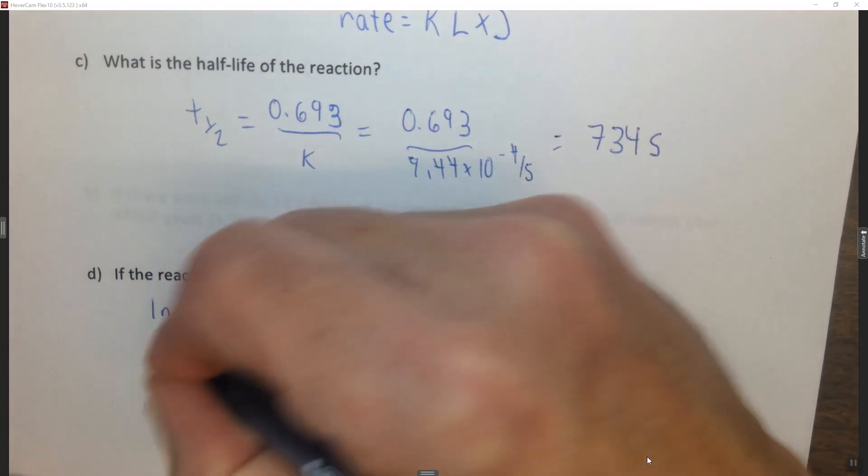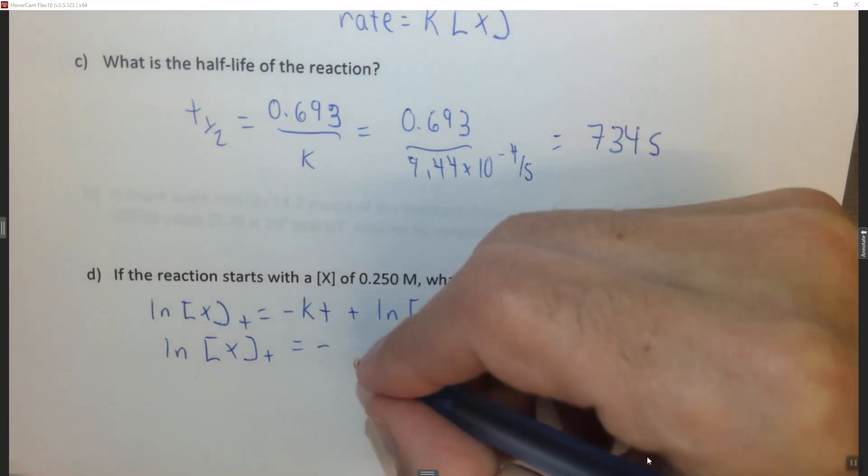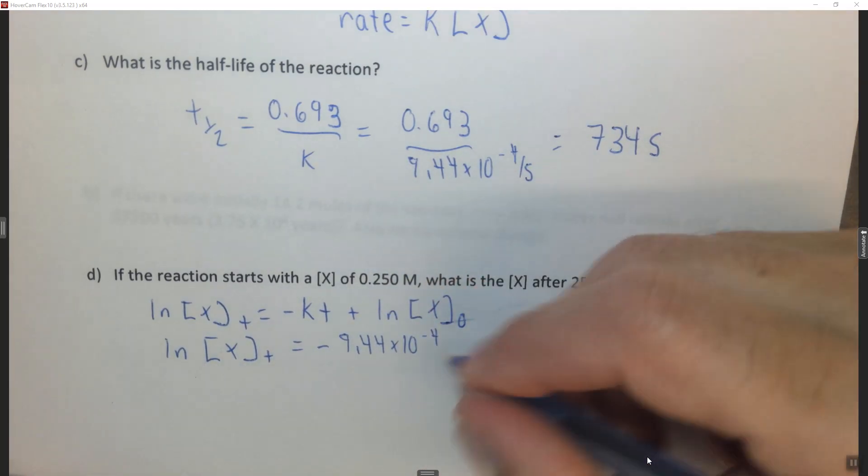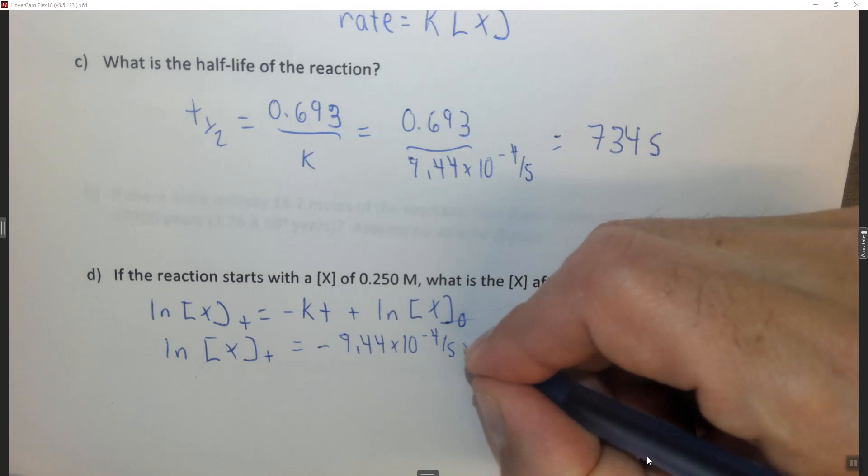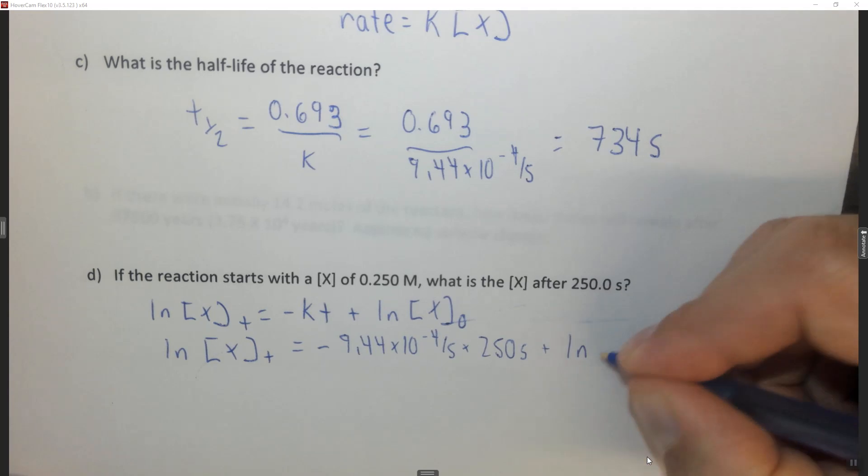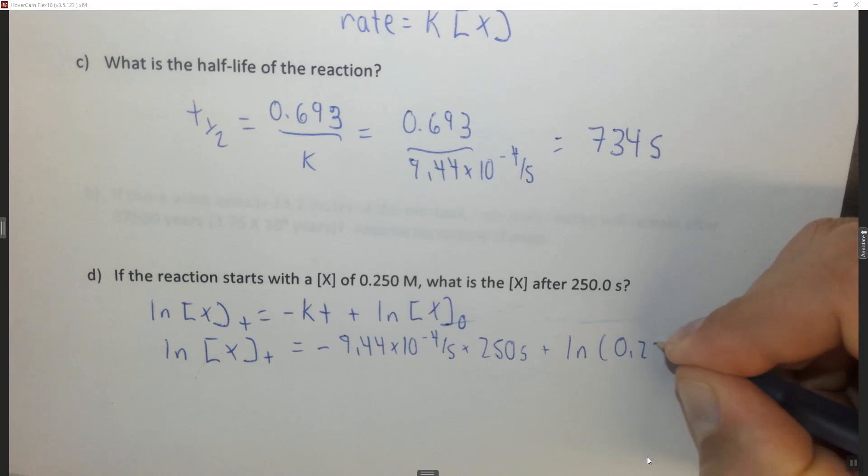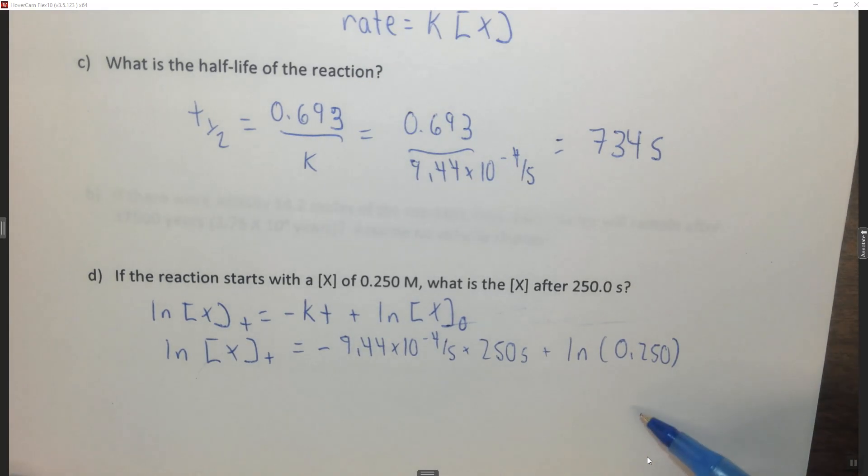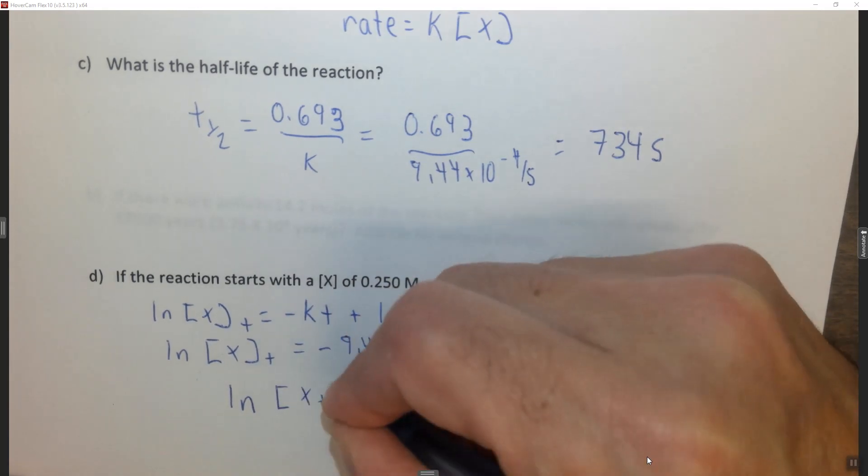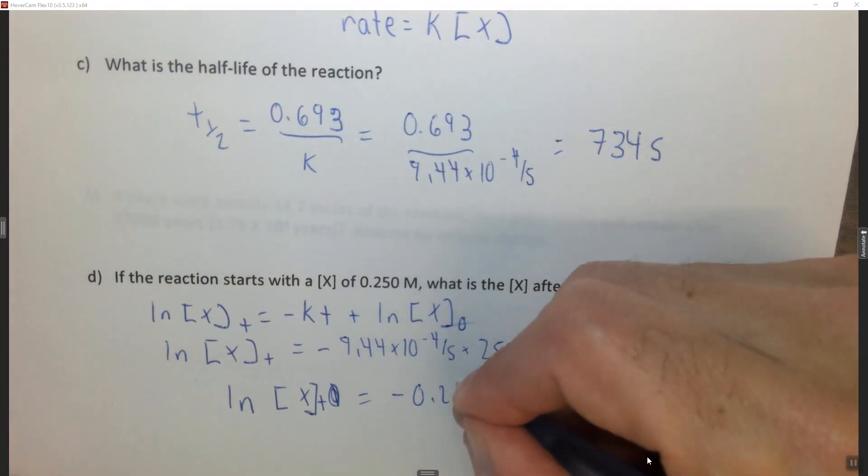So the ln of the concentration of x after some time is equal to negative k, which is 9.44 times 10 to the minus 4 per second, times the 250 seconds plus the ln of the initial concentration of x, which is 0.250. I'm going to leave out the molar here. So the ln of the concentration of x at some time is equal to, if you multiply these two things together, you get negative 0.236.